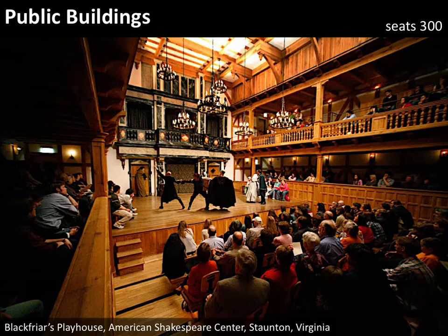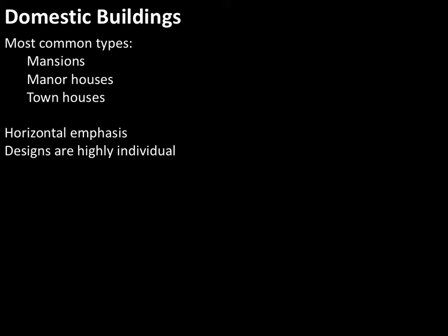Let's look at some domestic buildings. The most common types you're going to find in England are mansions, manor houses, and townhouses. Townhouses are in town; manor houses are out of town. All of them are going to have a strong horizontal line to them, but the designs are highly individual.